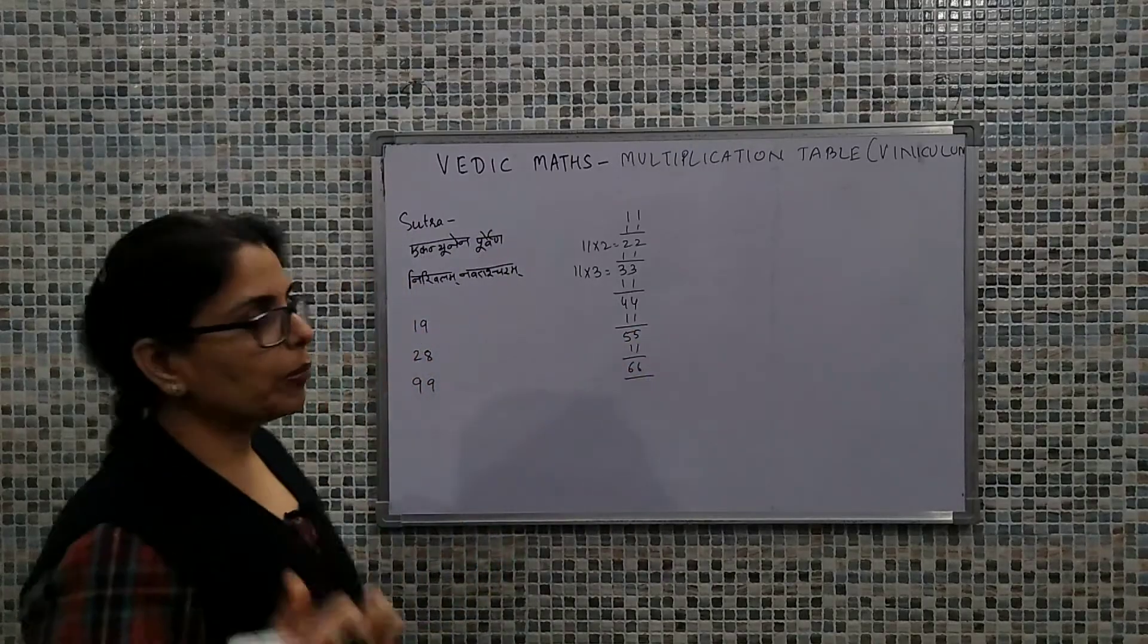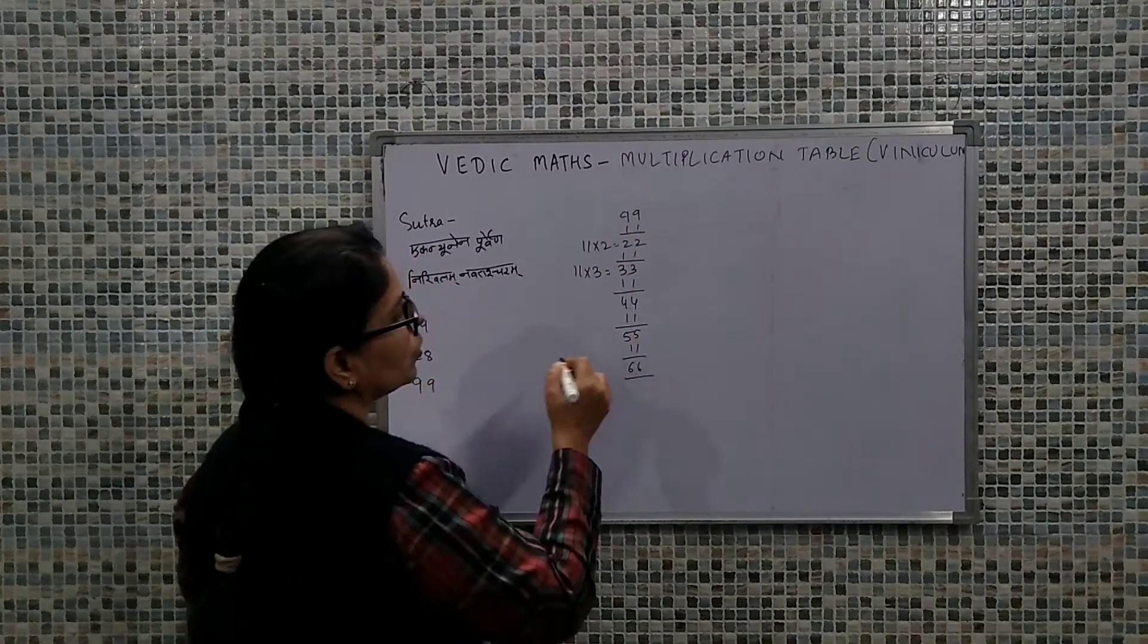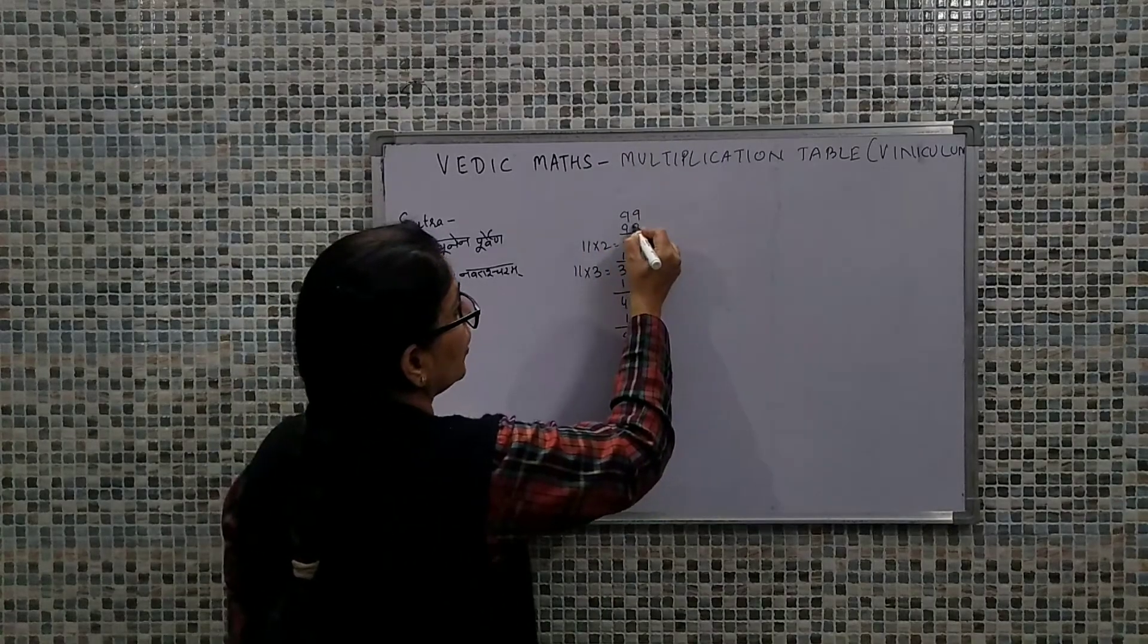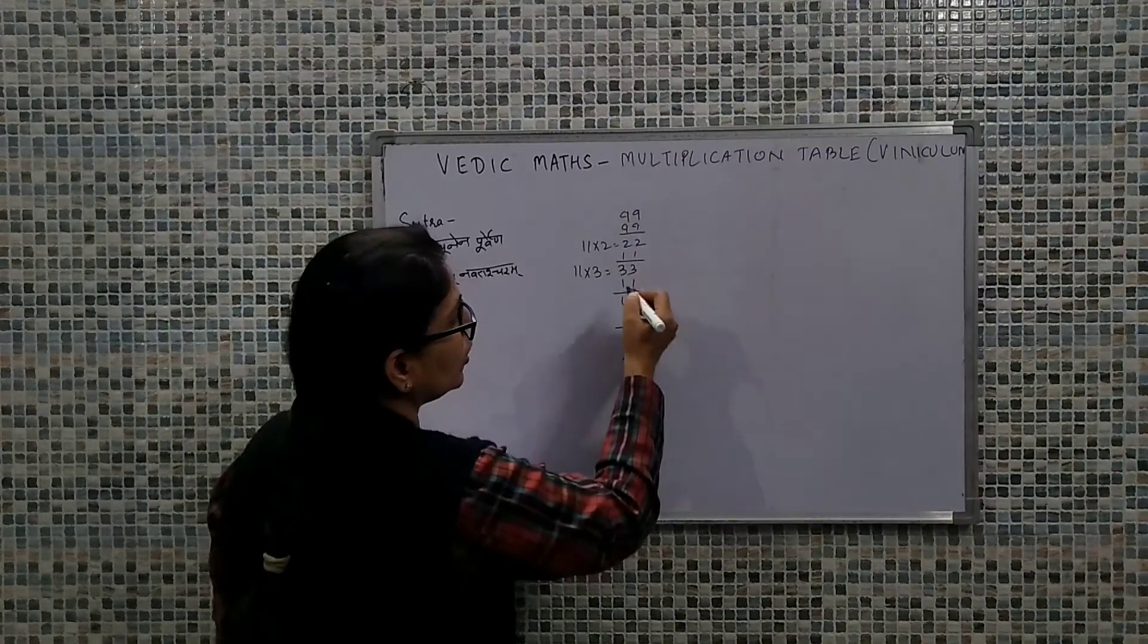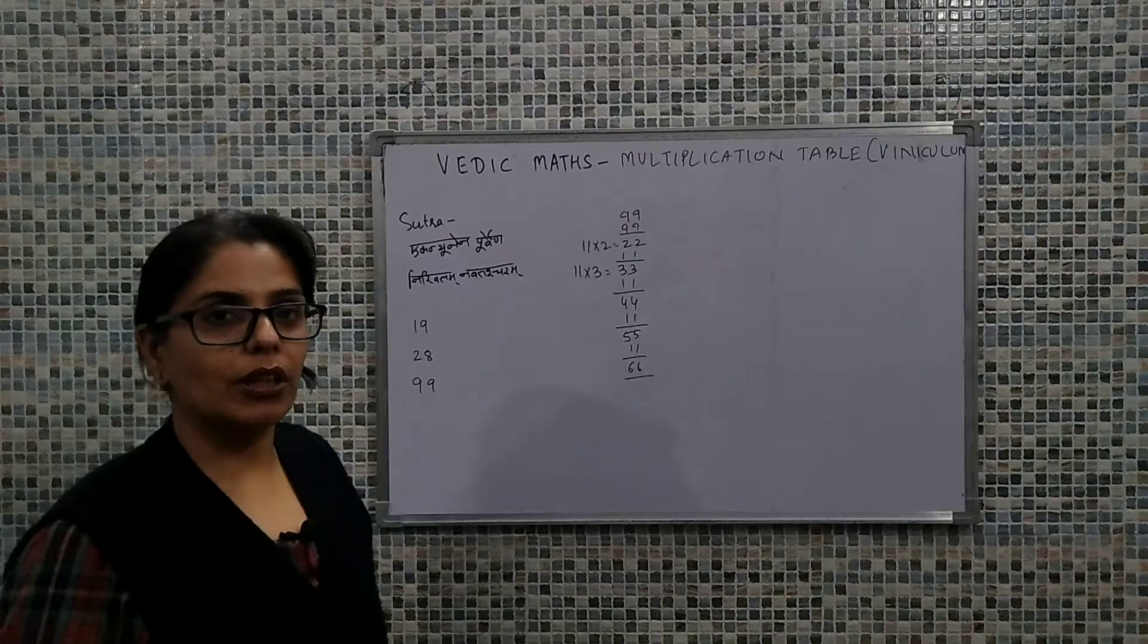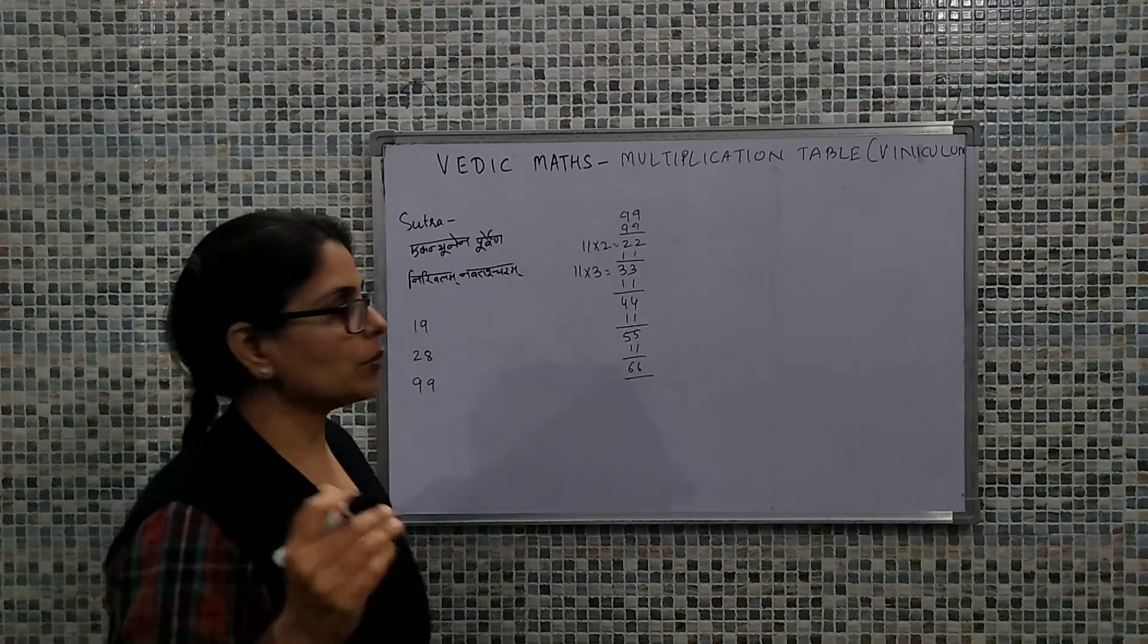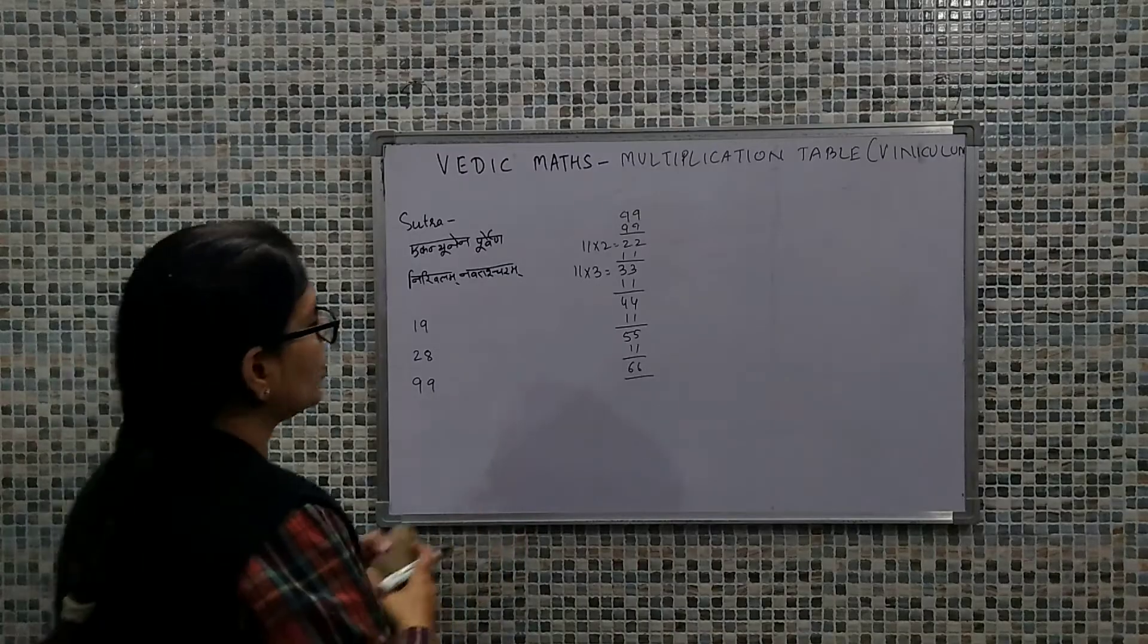But if we are having bigger values, suppose if it's 99, then adding 99 twice would be typically lengthy. And if we talk about bigger values' tables, to simplify that process we would be using the concept of viniculum.